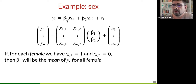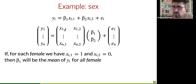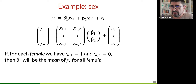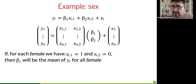A trivial example: we model weight depending on sex. Column one will be one when the person is female and zero when male; column two is the opposite. When we do the model, beta_1 will be the mean value of Y for all females — the mean weight. You can make your own matrix if you know what the factors are, though in general you want to use R to do the work for you.